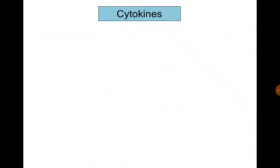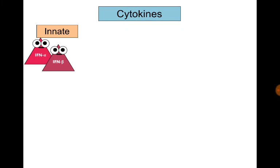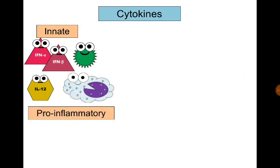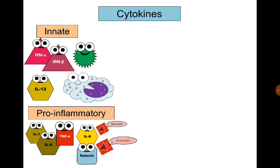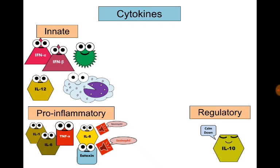The most important cytokines: first, cytokines of innate immunity. Type 1 interferons — interferon alpha and interferon beta — which interfere with viruses. Interleukin-12 is produced by macrophages. Pro-inflammatory cytokines include interleukin-1, interleukin-6, and tumor necrosis factor alpha. Chemokines are chemotactic factors like interleukin-8, which calls for neutrophils, and eotaxin, which calls for eosinophils. The important regulatory cytokine is interleukin-10.